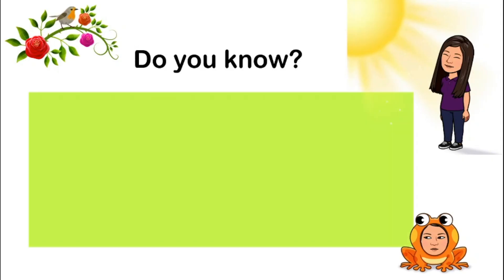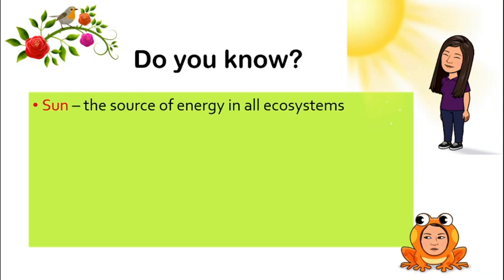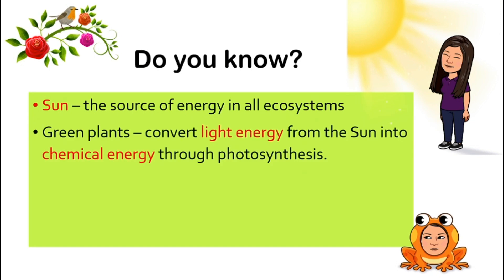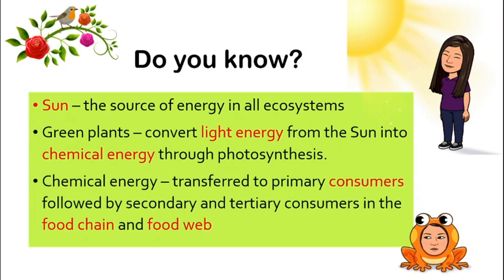Do you know what is the source of energy in all ecosystems? It is actually the sun. Because the green plants will convert the light energy from the sun into chemical energy — in other words, food — through photosynthesis. And the chemical energy will then be transferred to primary consumers, followed by secondary and tertiary consumers in the food chain and food web.